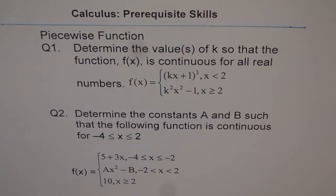Question number one: Determine the values of k so that the function f(x) is continuous for all real numbers. f(x) equals (kx + 1)³ if x < 2, and k²x² - 1 where x ≥ 2.